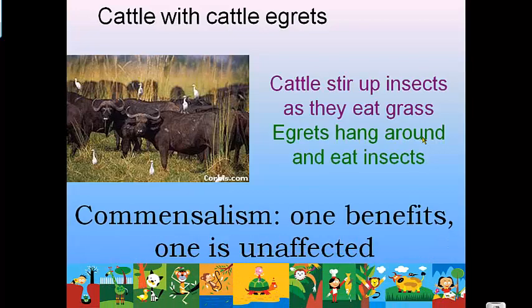Another example of a commensal relationship is cattle and egrets. Egrets are little white birds. As the cattle move around and eat the grass, they stir up bugs in the grass, causing them to fly into the air. The egrets hang around and eat those bugs. The cattle don't really benefit from this relationship and aren't harmed either — they could care less. The egrets benefit because they get food. It's a commensal relationship.